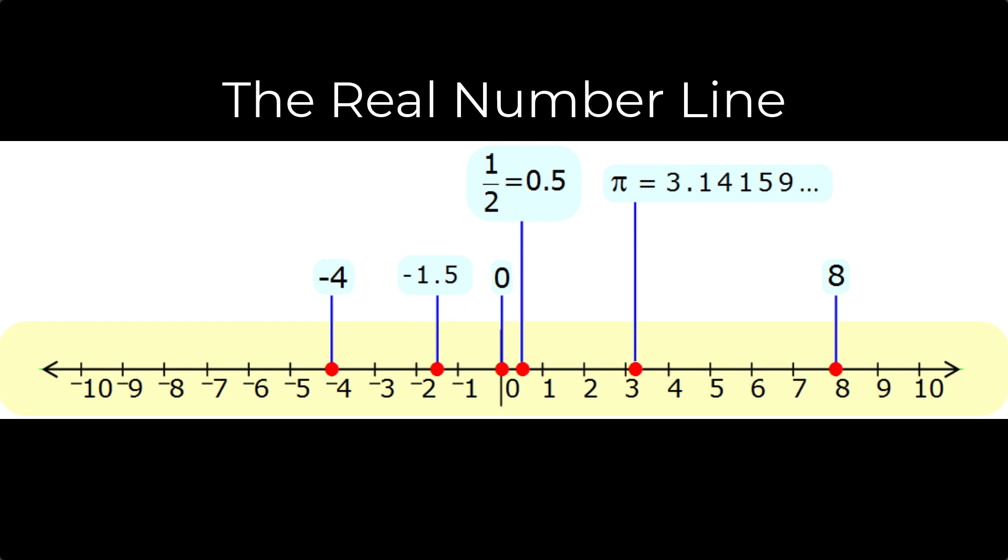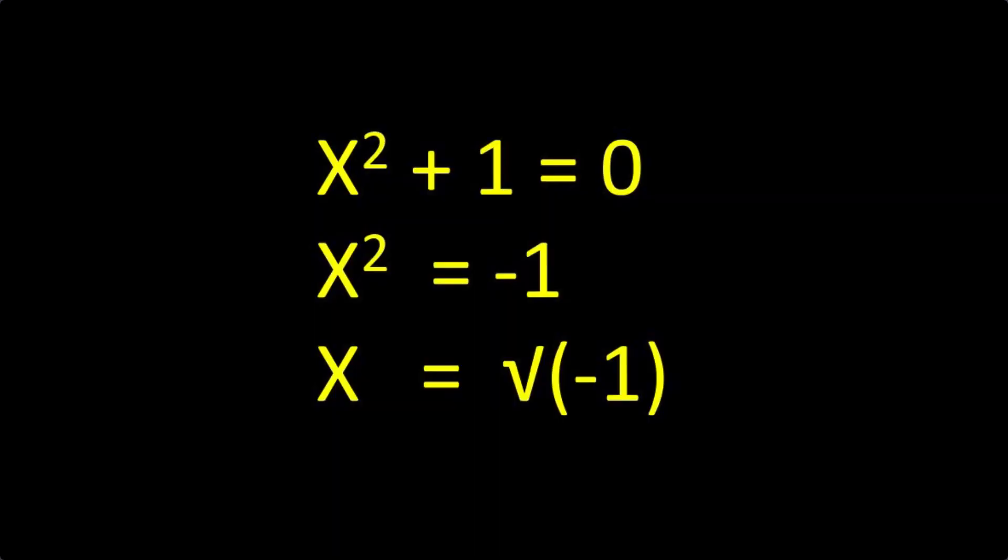With these numbers we can do many wonderful calculations. But there are some very simple looking calculations which can't be done with them. For example, the simple equation x squared plus 1 equals 0. The solution must be x is the square root of minus 1.